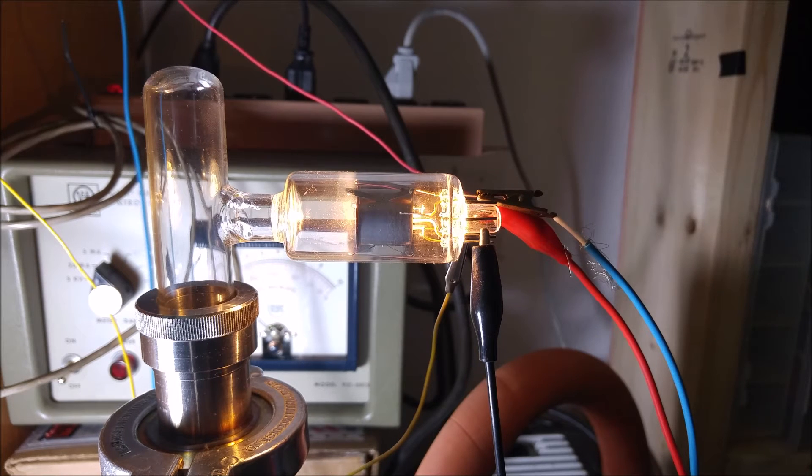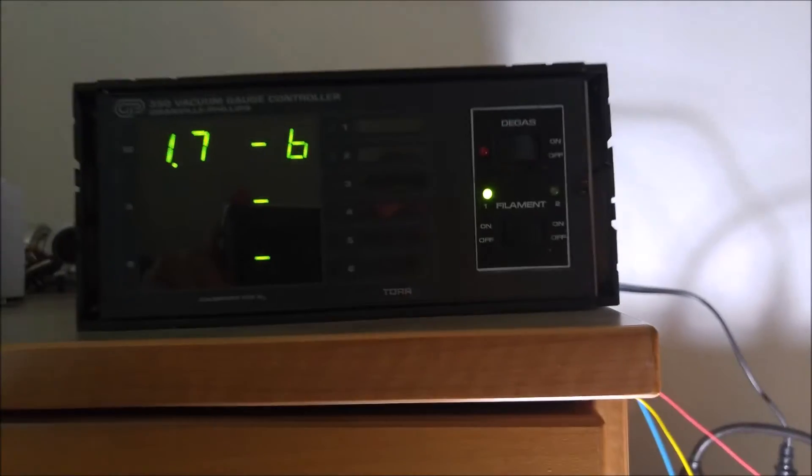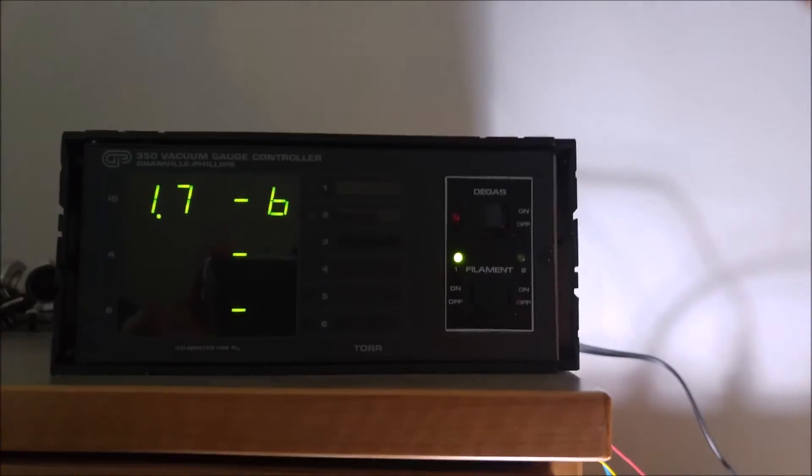First, let's talk about what an ion gauge is and what it does. An ion gauge is an instrument used to measure levels of high vacuum, from about 1 times 10 to the negative 3rd torr to 1 times 10 to the negative 8th torr. Newer gauges can read even lower amounts.